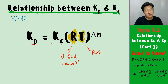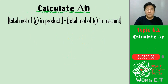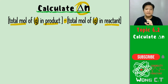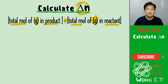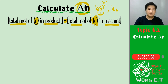If you have the Kp value, we can find the Kc value, or vice versa. What is delta N? Delta N is the total moles of gas in the products minus the total moles of gas in the reactants. Since we are talking about the relationship between Kp and Kc, delta N only counts gases.